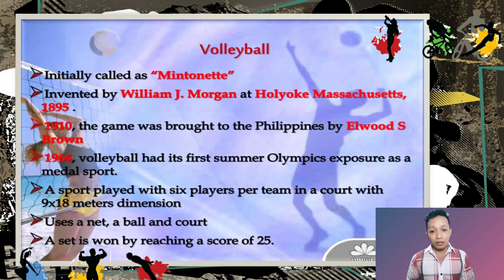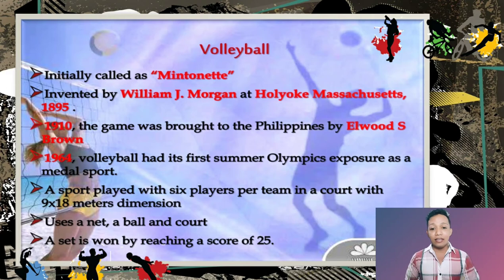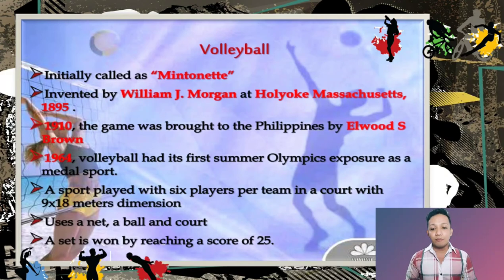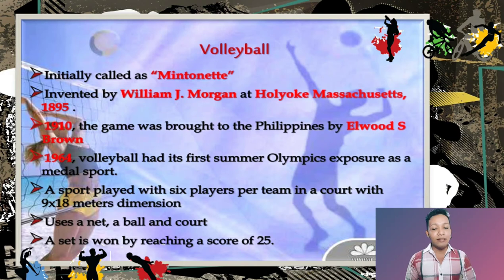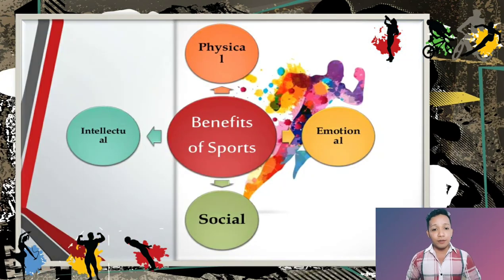Another indoor recreational activity is volleyball, initially called 'mintonette,' invented by William J. Morgan in Holyoke, Massachusetts in 1895. In 1910 the game was brought to the Philippines by Elwood S. Brown, and in 1964 volleyball had its Summer Olympics debut as a medal sport. It is played with six players per team on a 9 by 18 meter court using a net and ball, and a set is won by reaching a score of 25.